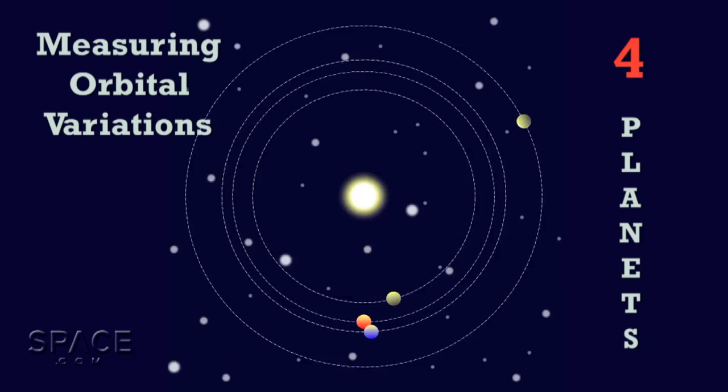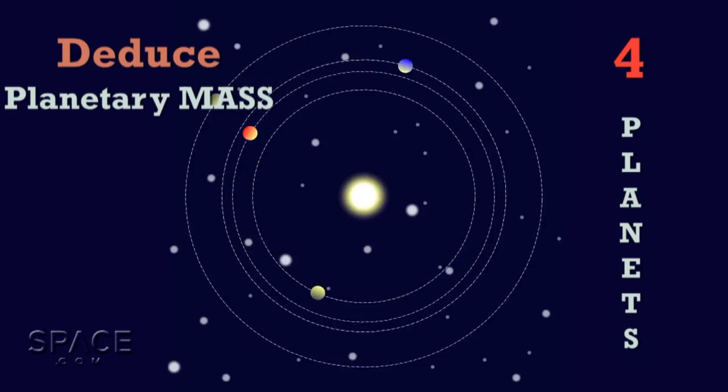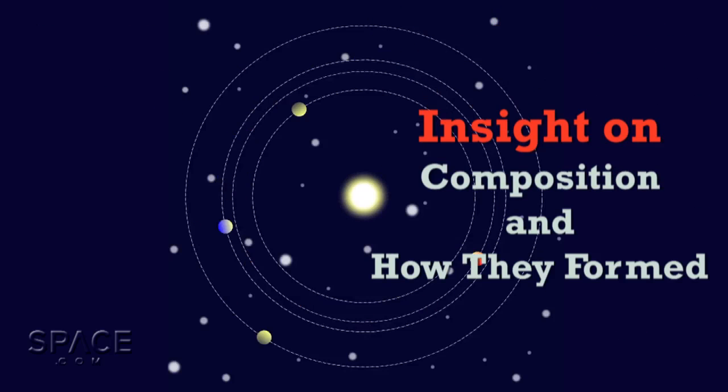By measuring the variation in the planetary orbits, scientists can deduce the mass of each planet. In turn, this can deliver insight into the composition of the planets and how they formed.